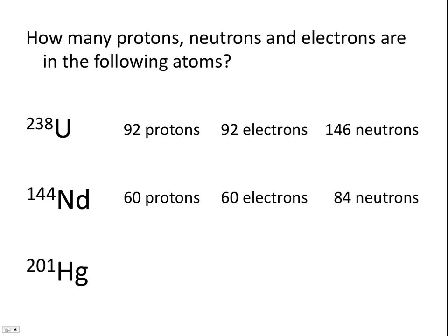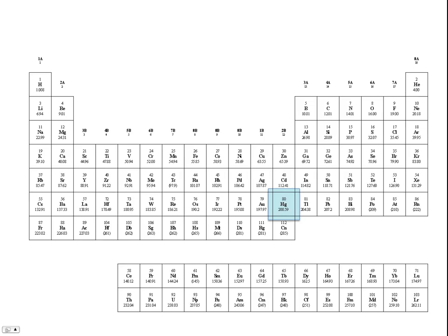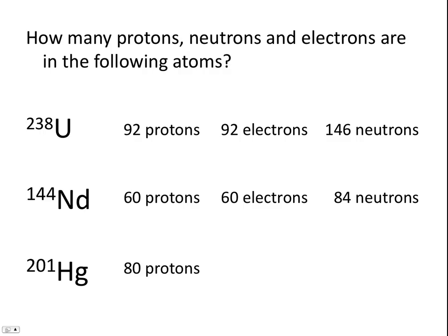In our last example, Hg is the symbol for mercury. When we look that up on the periodic table, we see that the atomic number for mercury is 80, which means mercury must have 80 protons. A neutral mercury atom must also have 80 electrons. If this isotope of mercury has a mass number of 201, then this isotope must have 121 neutrons.